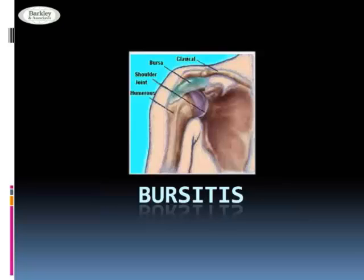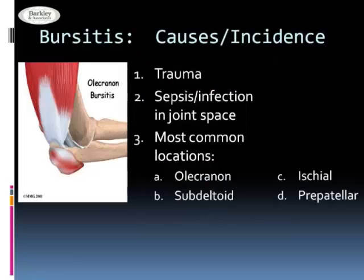Bursitis is inflammation of the bursa — that closed sac lined with a synovial-like membrane in an area subject to friction. Olecranon is a very common one, though it could be subdeltoid, ischial, or prepatellar.